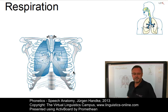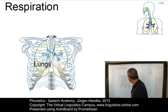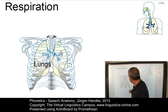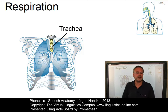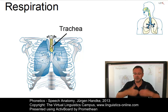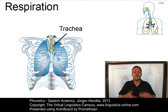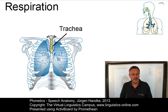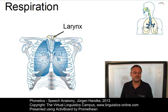The air coming from the lungs — here are the lungs — then moves through our trachea, which some people call the windpipe, into the throat. And on the way, the air passes the larynx.